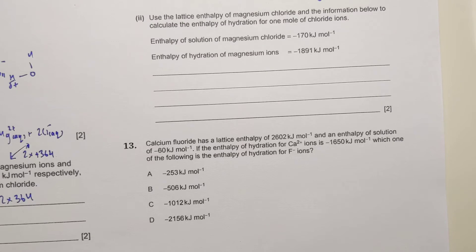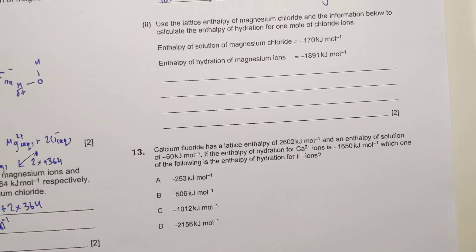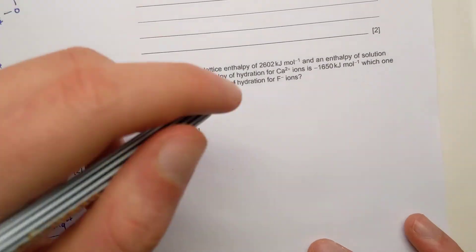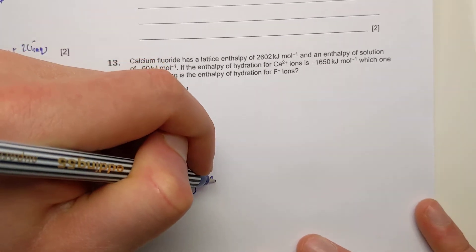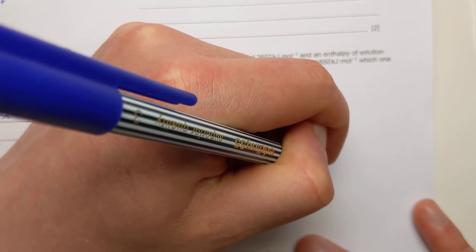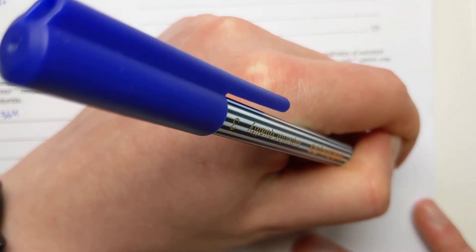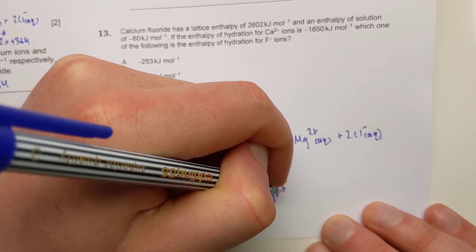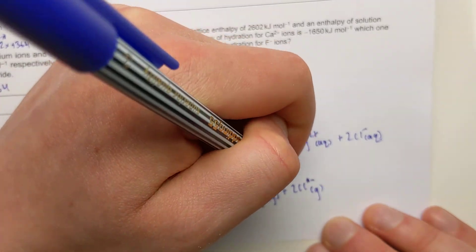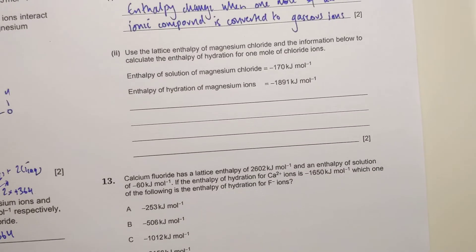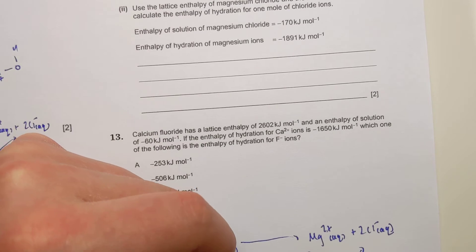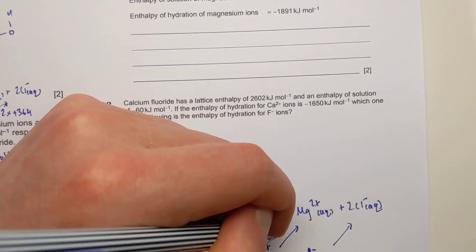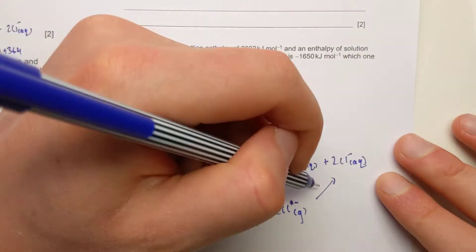Part two uses the lattice enthalpy and given chloride information to calculate the enthalpy of hydration for one mole of chloride ions. The values are slightly different from the previous question — from a different data table — but the cycle is the same: MgCl₂ solid → Mg²⁺(aq) + 2Cl⁻(aq), with the lattice step splitting into gaseous ions and hydration forming the solution. Values given: lattice enthalpy = plus 2489, enthalpy of solution = minus 170, hydration of Mg²⁺ = minus 1891. The missing value is the chloride hydration enthalpy.